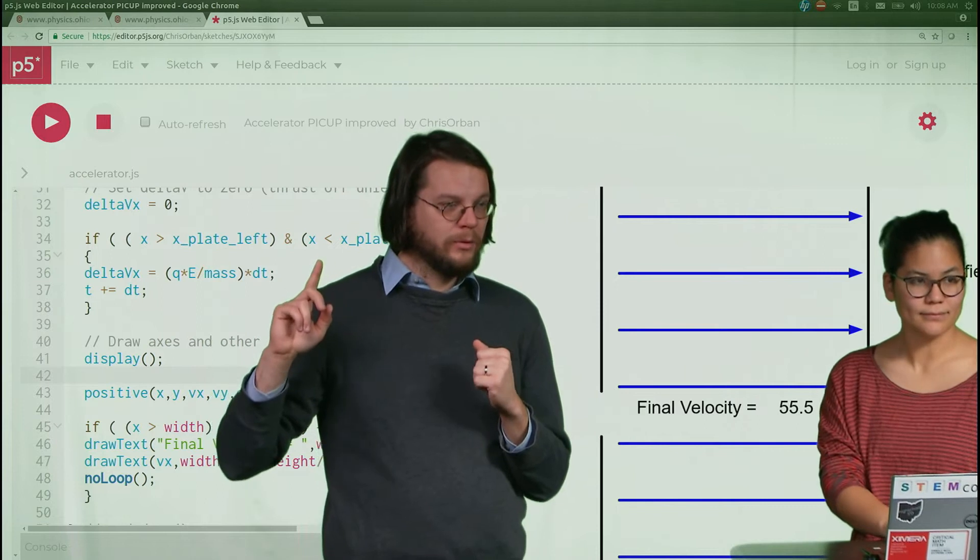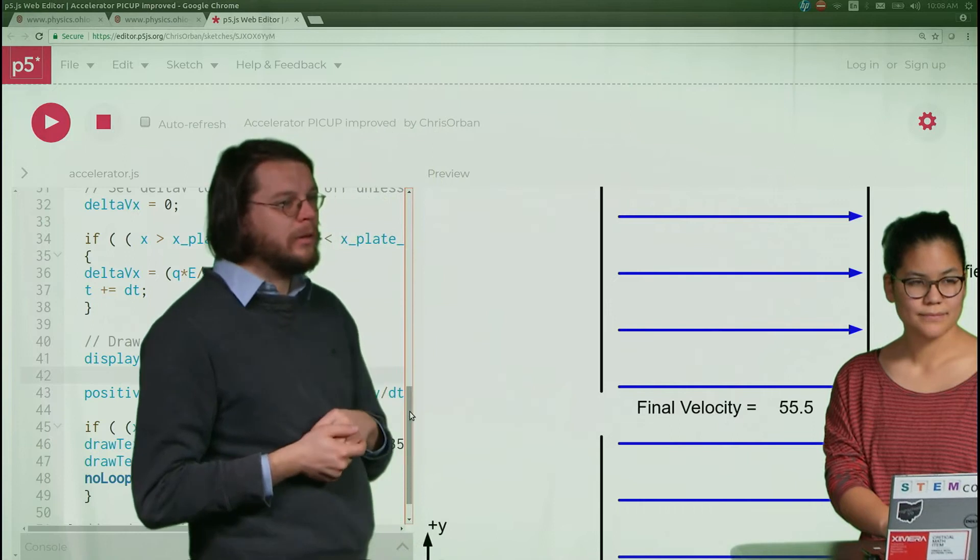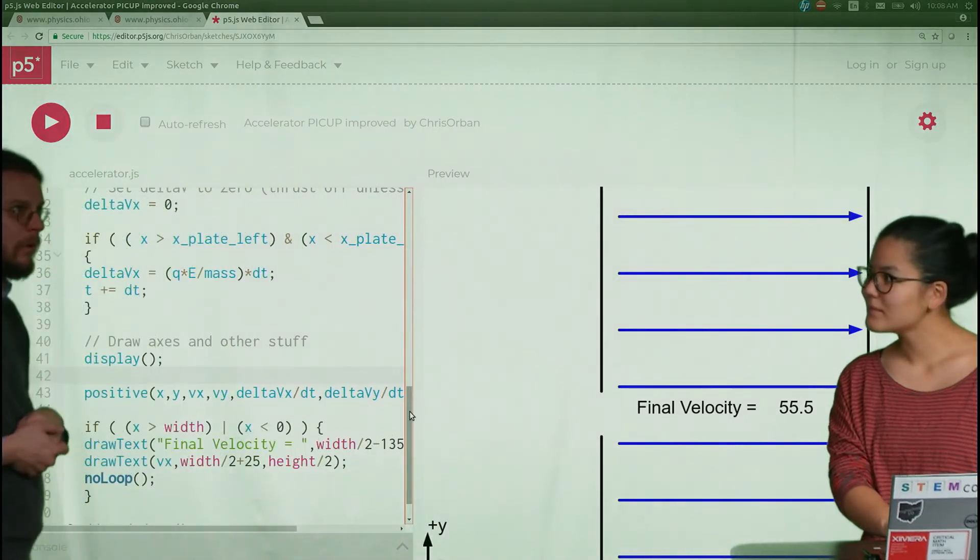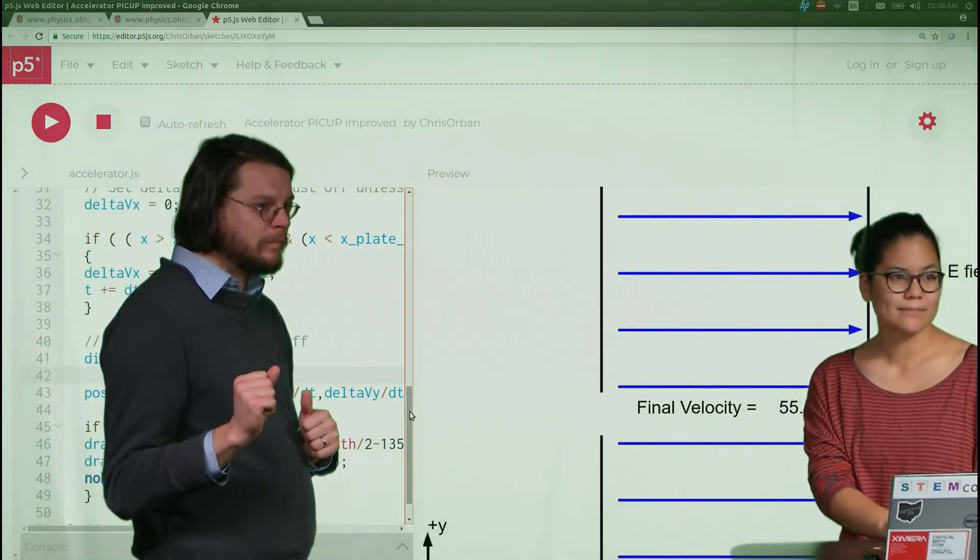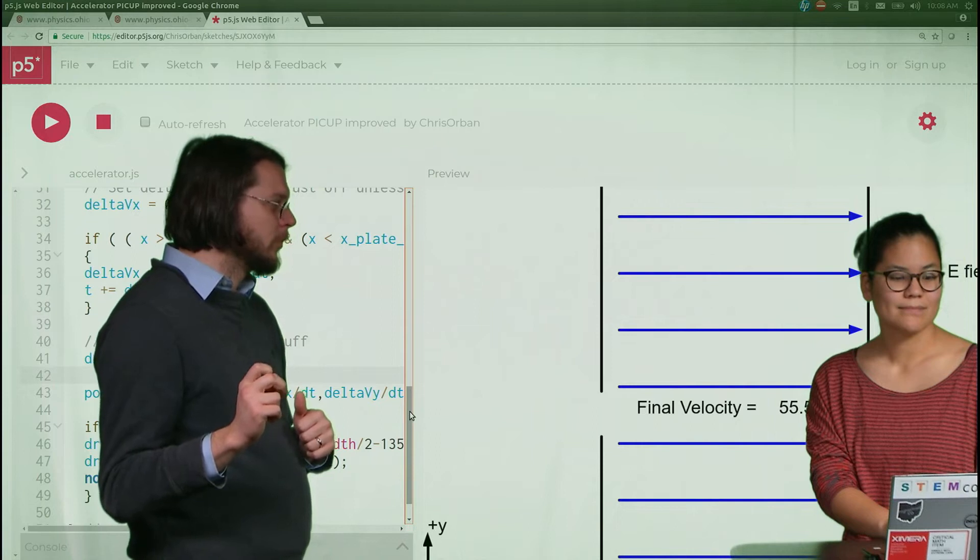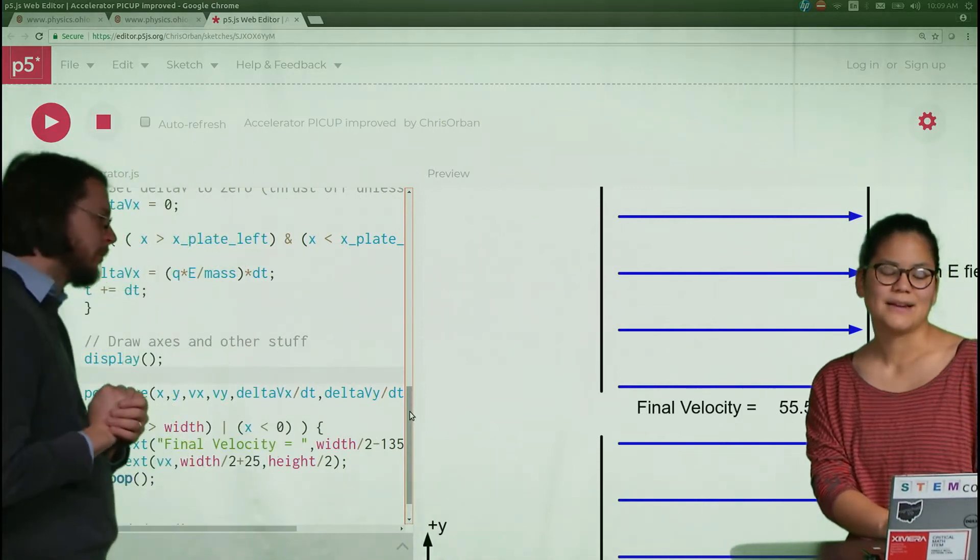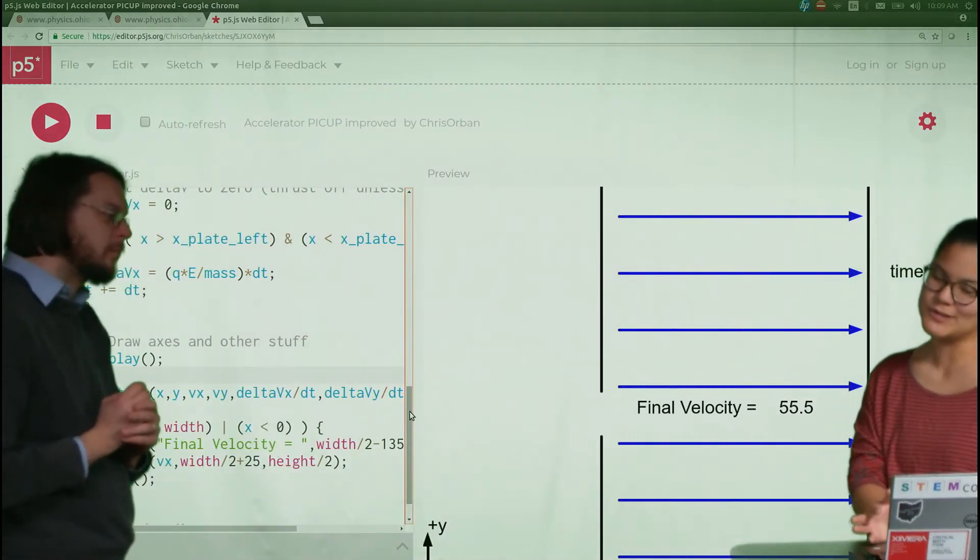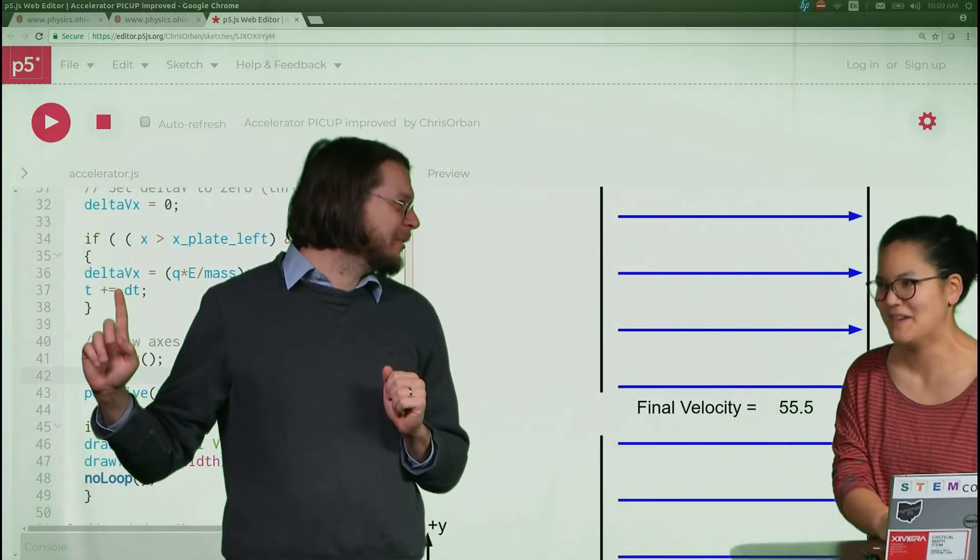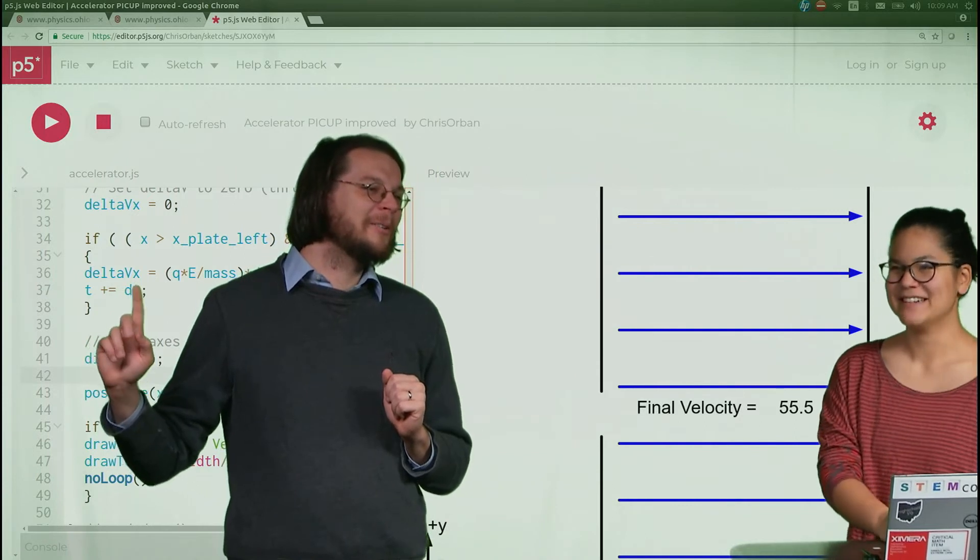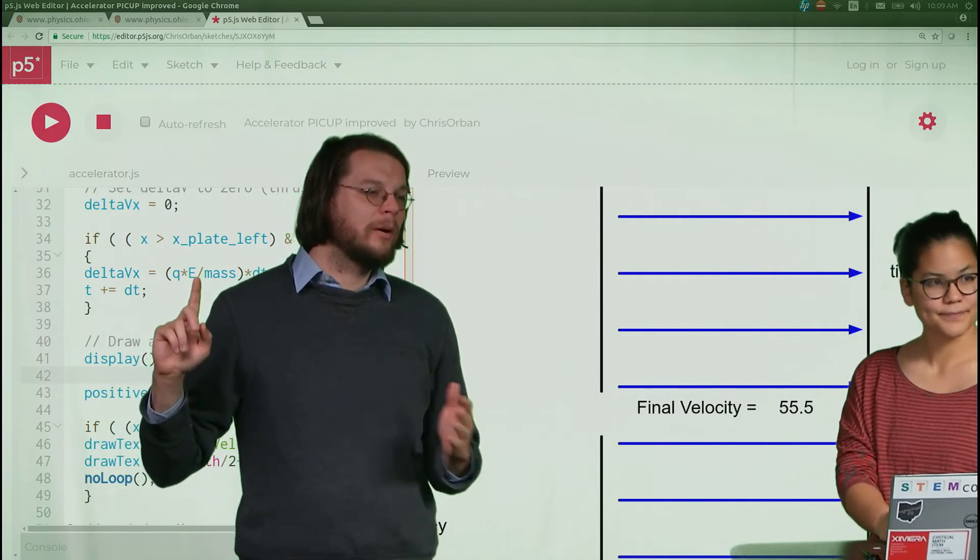Does this time get increased all the time or is it only when there's only when something special happens? Is that keeping track of how much time has happened from the start of the simulation or is it keeping track of something else? It's keeping track of how long the particle's in between the two plates. Because if the if statement isn't true, then this code doesn't get run.